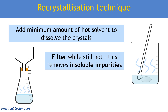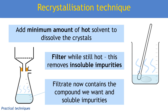While it's still hot, we should filter it. Some practical procedures miss this step out, but the reason we should do it is to remove insoluble impurities such as anti-bumping granules or bits of dust. There shouldn't be much on the filter paper, but this step ensures they're not in my final solid. What I'm now left with in my hot filtrate is the compound I made — for example, aspirin — and also dissolved in that filtrate are all of my really soluble impurities.